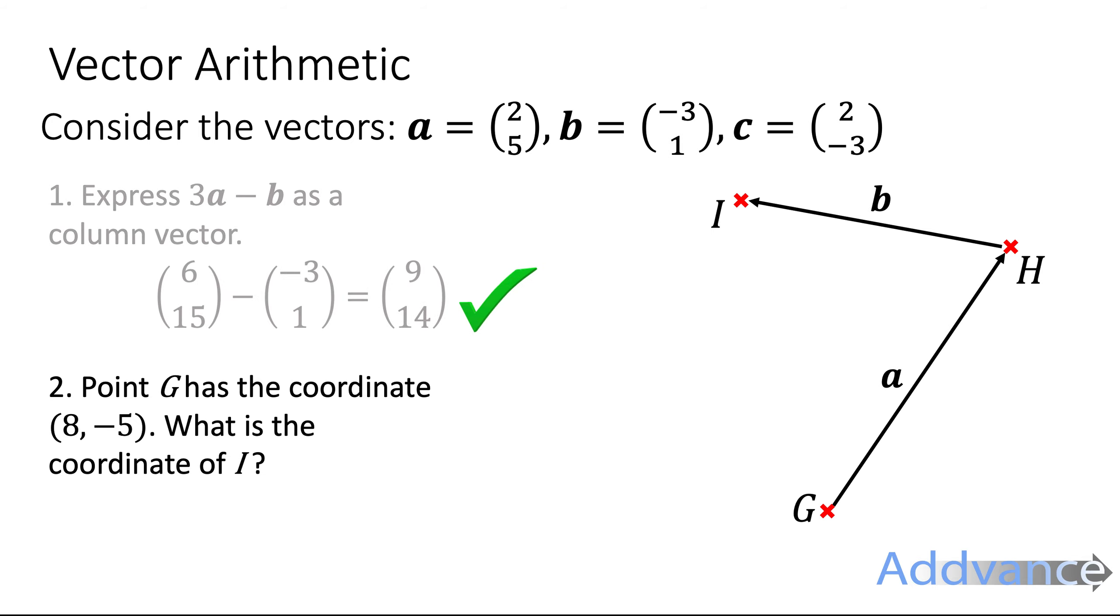Now we're looking at the point G and it's got the coordinate (8,-5). We want to find the coordinate of I. Now this is totally fine we're just thinking of the paper we're looking at as a coordinate axis and x and y axis and so we're going from G to I that is the vector from G to I is G to H and then from H to I. So G to I is G to H and then H to I.